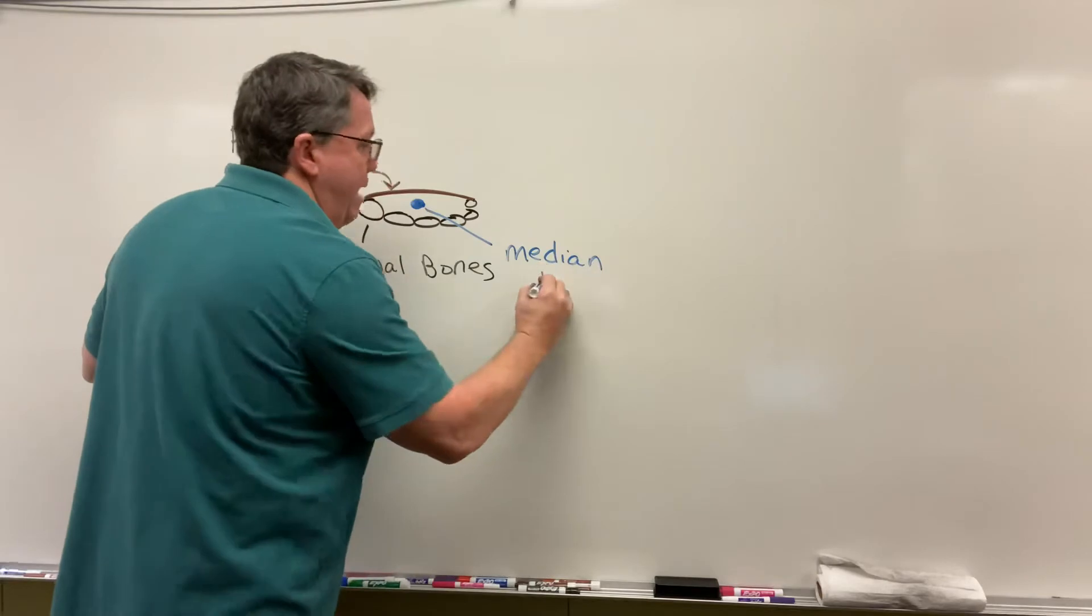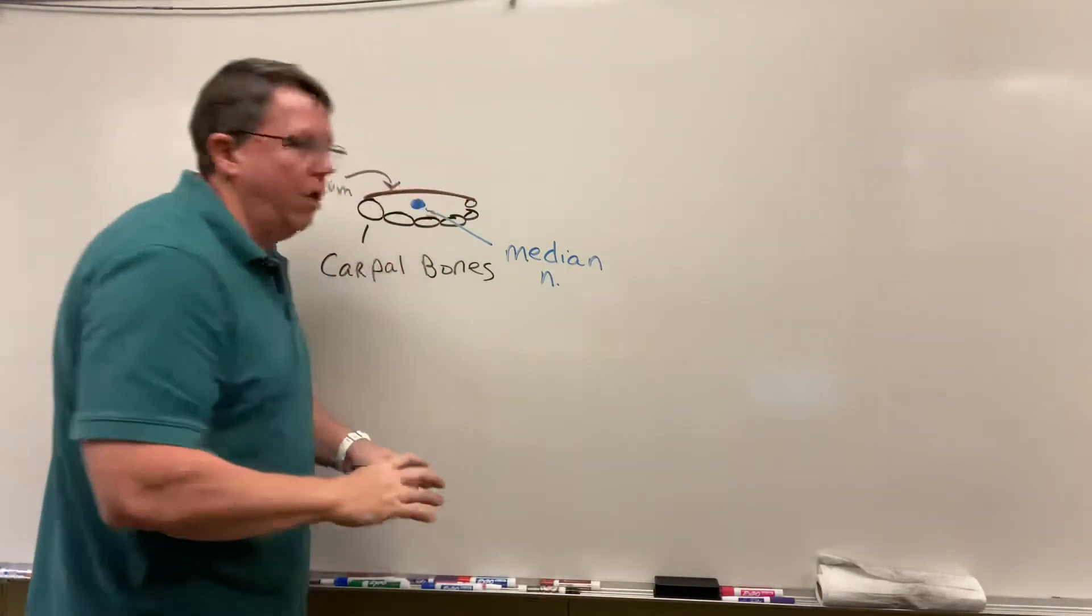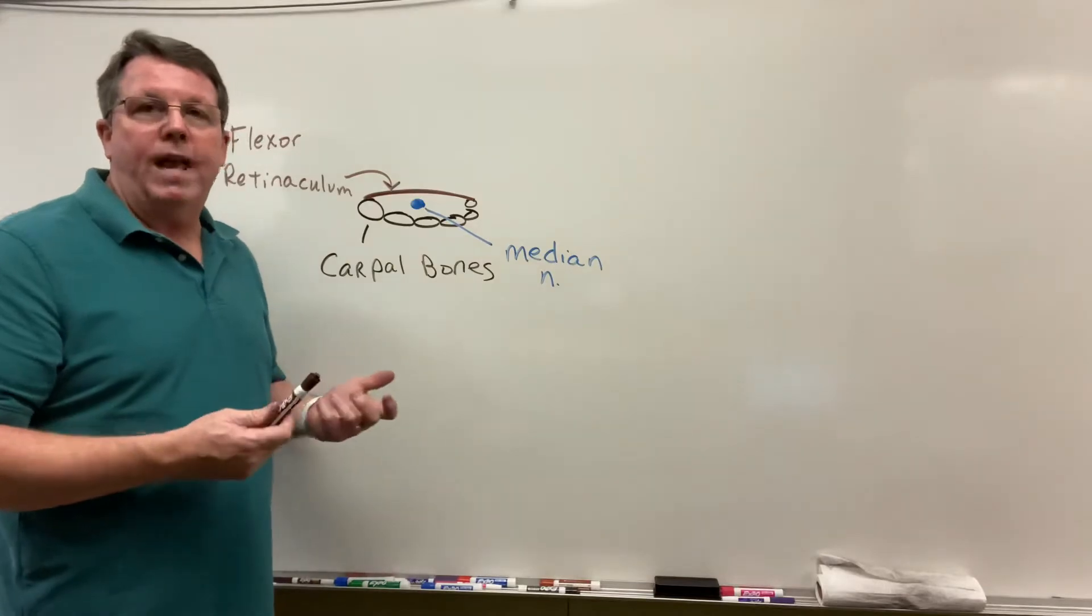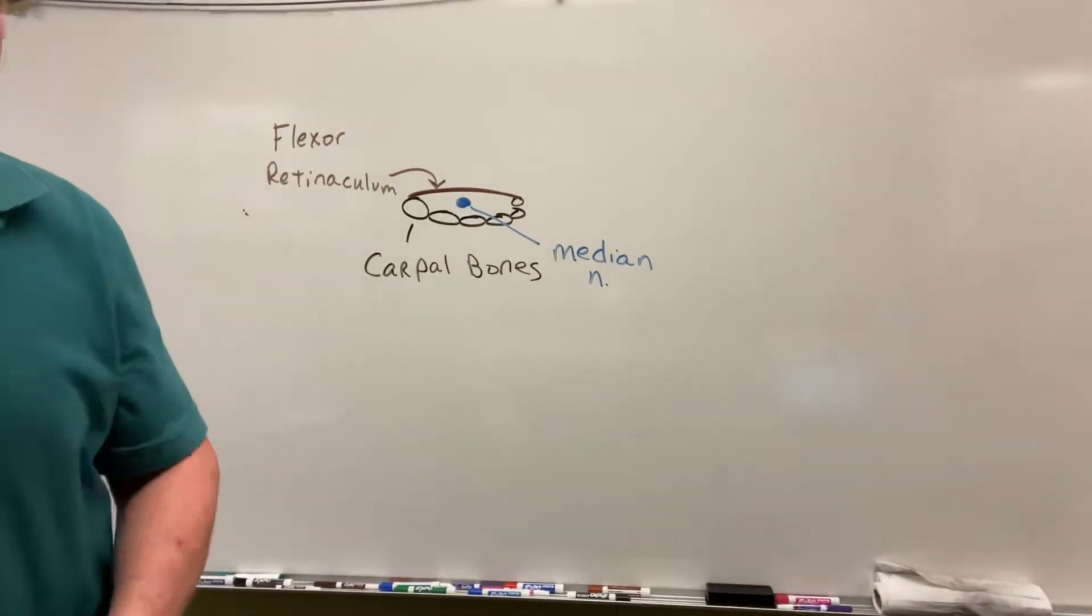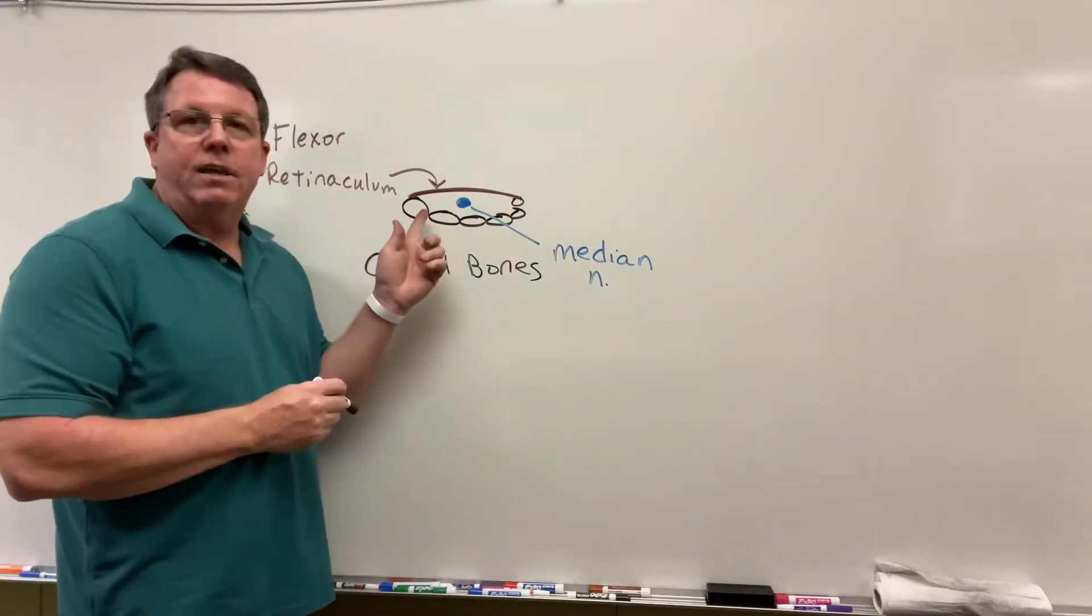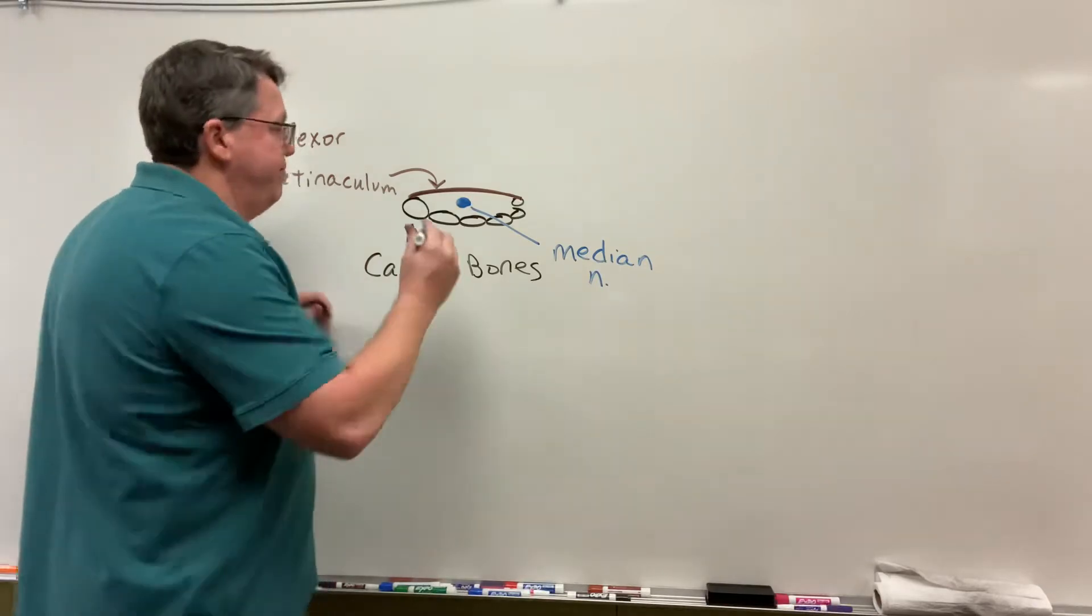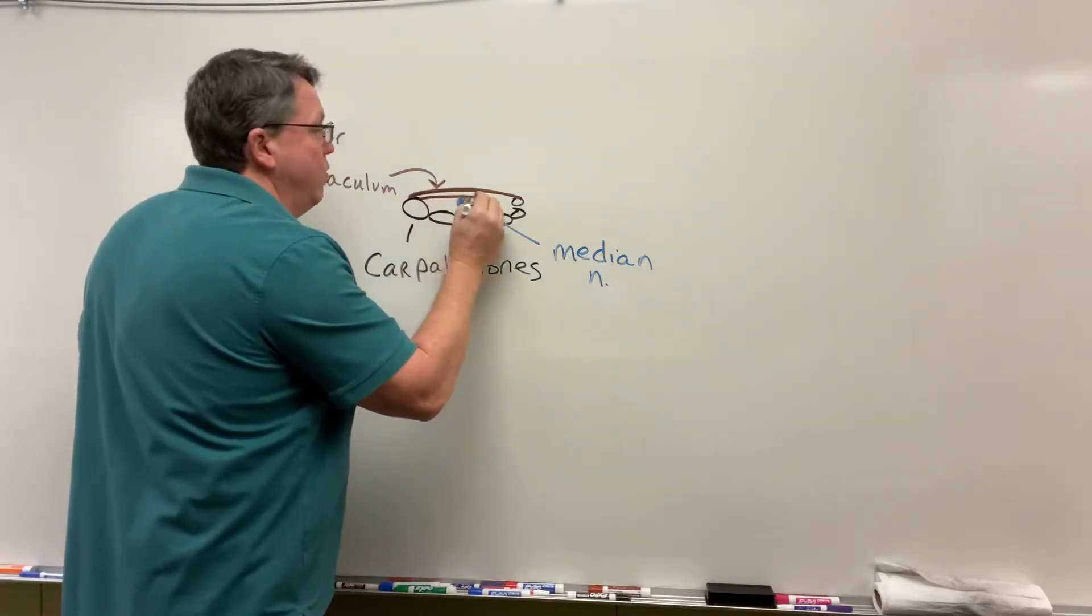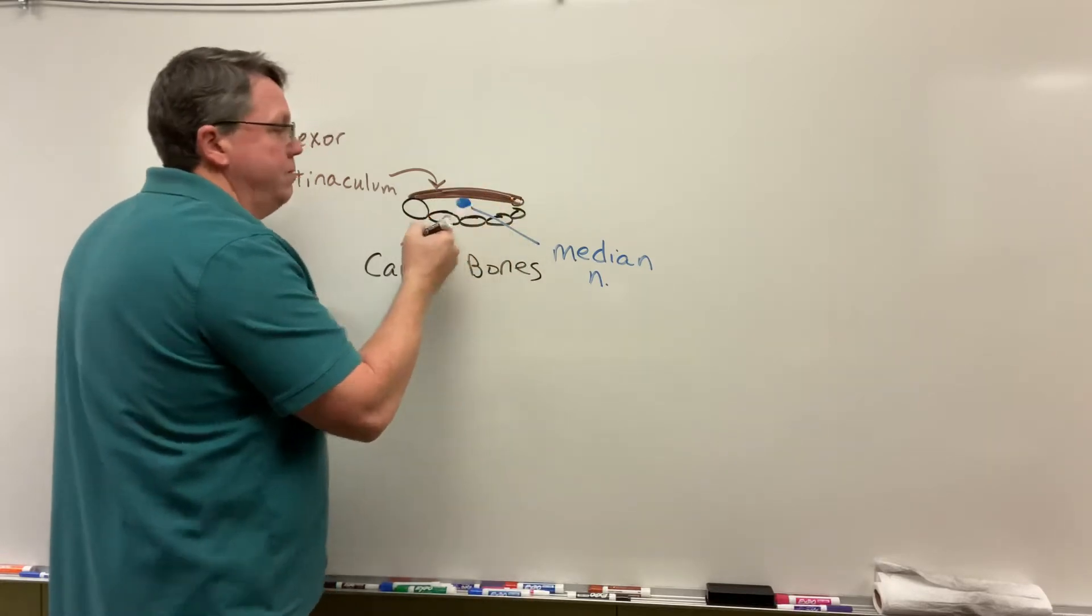As people type or do exercises where they have to repeat what they're doing with their wrist, this flexor retinaculum, just like other soft tissues, will start to increase in size. As it starts to increase in size, you will start to get pressure onto this median nerve.